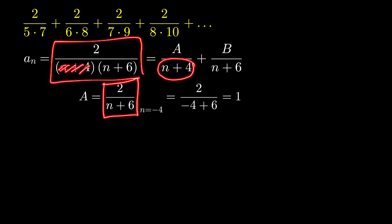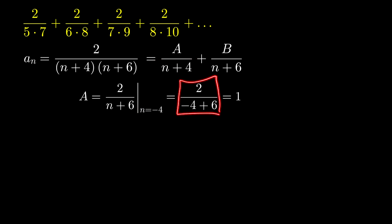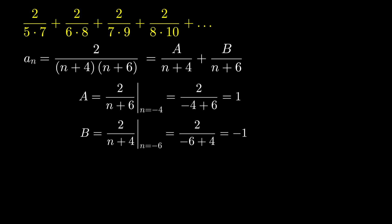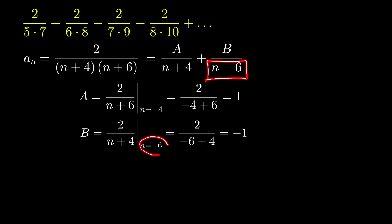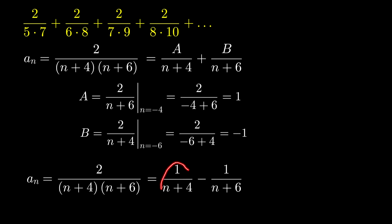To find A, we cover the denominator (n plus 4) in the expression and replace n with the value that makes it 0, which is n equals negative 4. So we get 2 over (negative 4 plus 6), which equals positive 1. Similarly, we find B by covering (n plus 6) and replacing n with negative 6, giving us 2 over (negative 6 plus 4), which equals negative 1. Therefore, a sub n equals 1 over (n plus 4) minus 1 over (n plus 6).